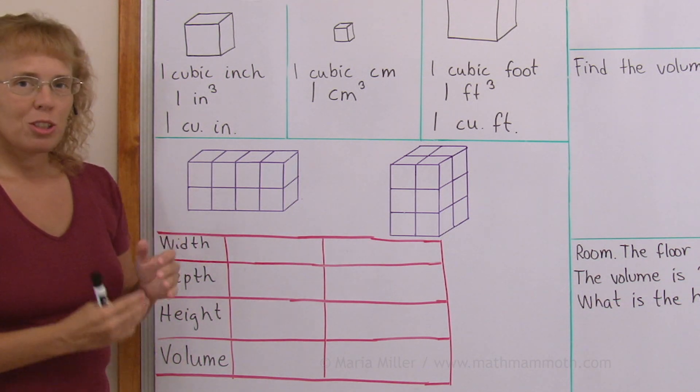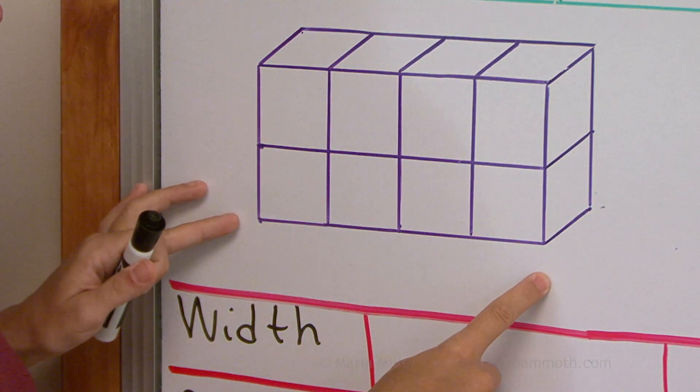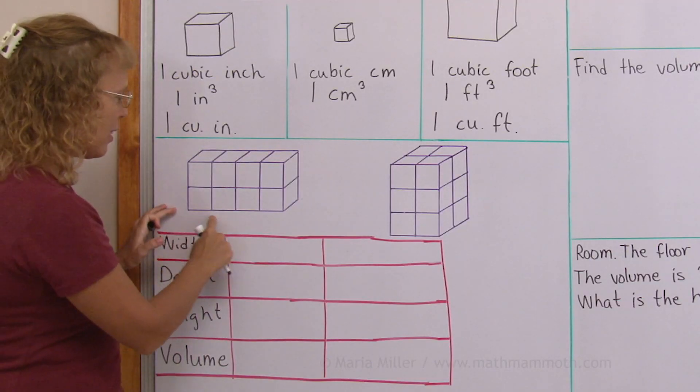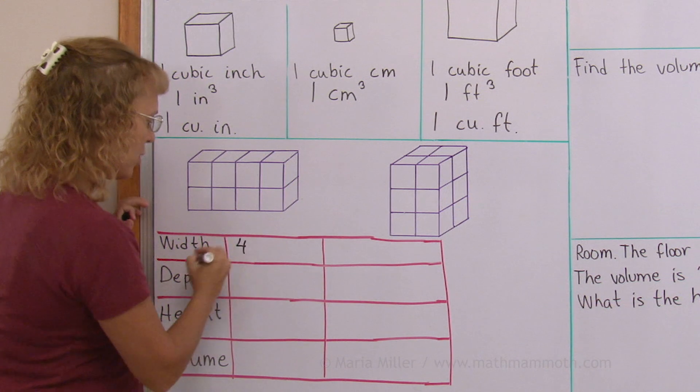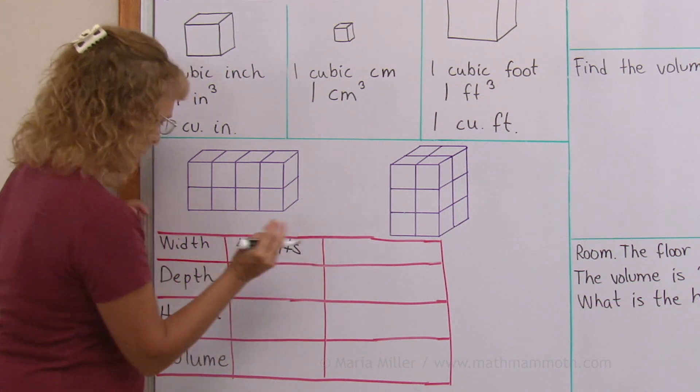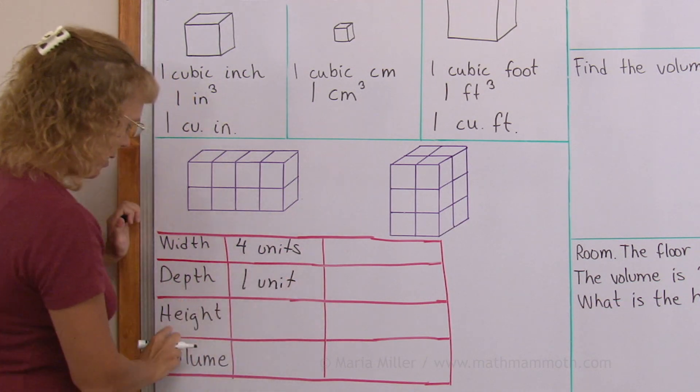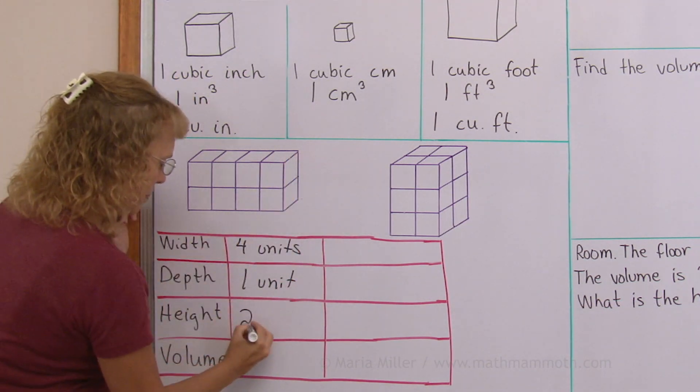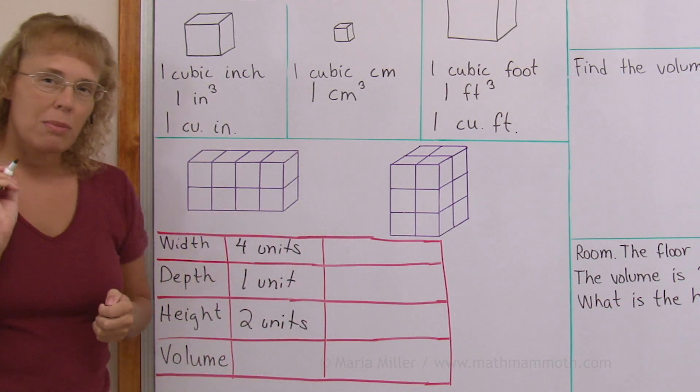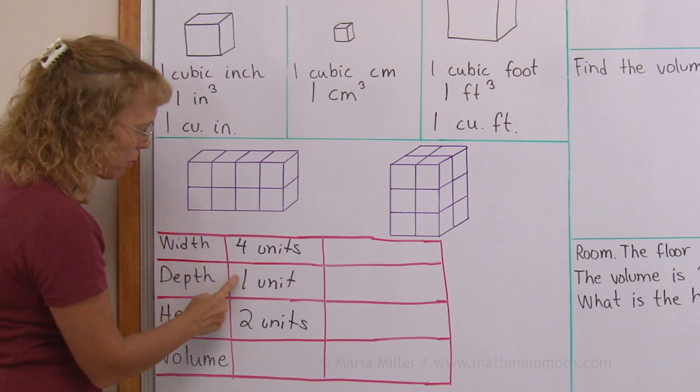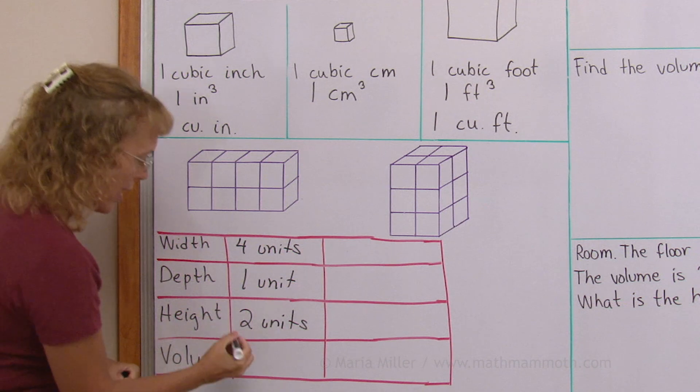But I also want to look at the width and the height and the depth. For this particular one, the width here is four units. The depth, this way, is just one unit. And the height, two units. We can multiply those to get the volume, the total volume. Four times one times two equals eight.